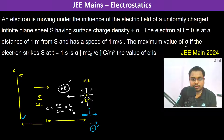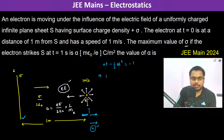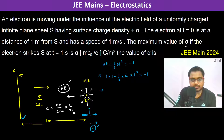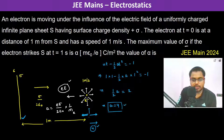We can write: u·t − ½·a·t² = −1. So, u = 1 m/s, t = 1 s: 1×1 − ½×a×1² = −1. Therefore, ½·a = 2, so a = 4 m/s². This is the maximum value of acceleration.